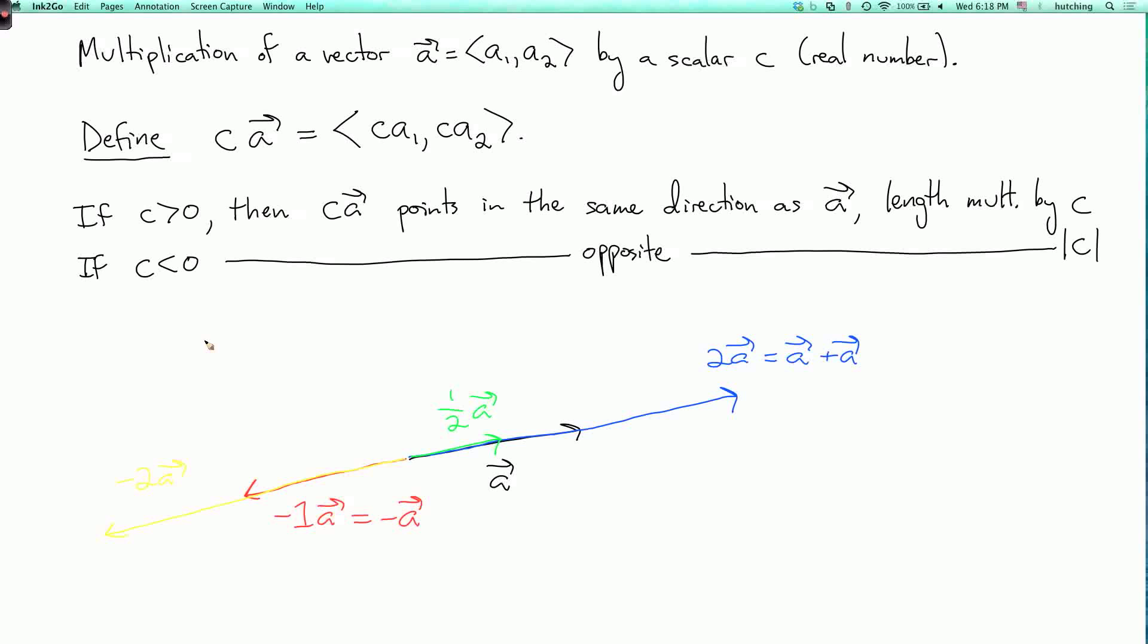The next basic operation we can do on vectors is to talk about the length of a vector. The length of a vector, A equals A1, A2, is defined by, so this notation for it is we put vertical lines around the A, and this is the square root of A1 squared plus A2 squared. This is sometimes also called the norm, or the magnitude of A.